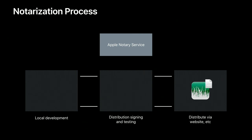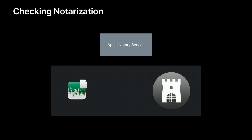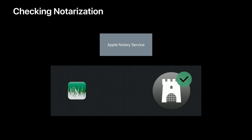This workflow didn't change at all from last year, so this is just a refresher. What we didn't talk about last year was what happens when someone downloads your software and uses it for the first time. When a user downloads your stapled software and double-clicks it to launch it, Gatekeeper will perform a verification. It checks the local ticket, and also reaches out to the notary service via CloudKit to check for a ticket. As long as the ticket checks out and matches the content of your app, Gatekeeper will allow the application and the user will see the normal first launch prompt.